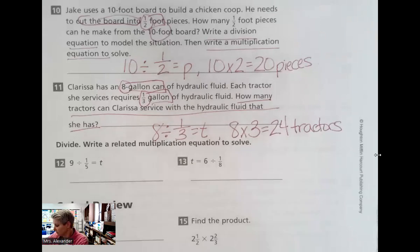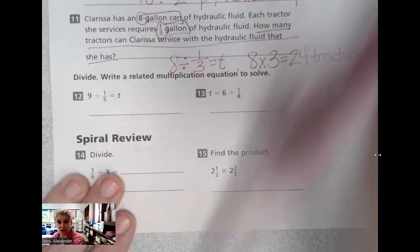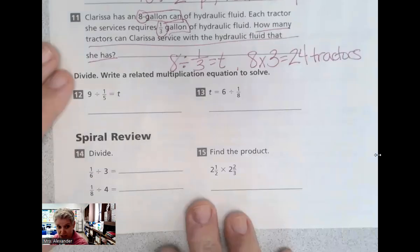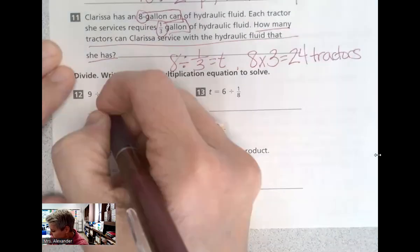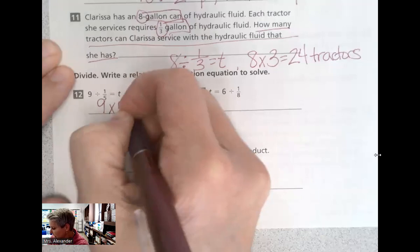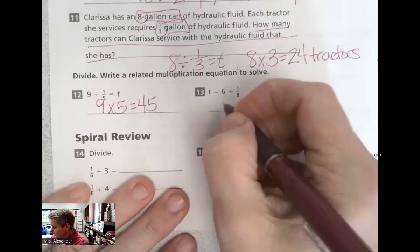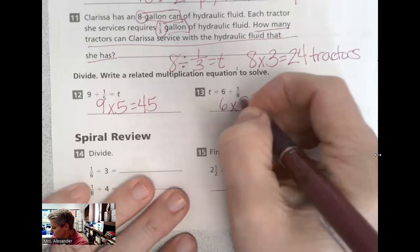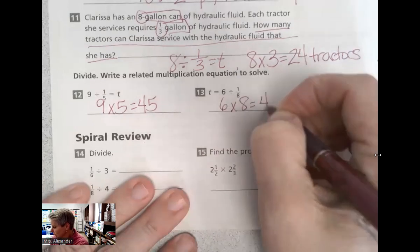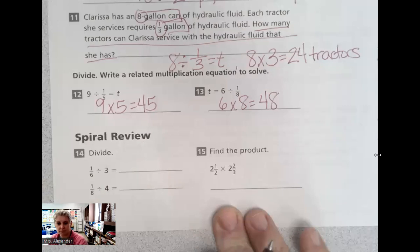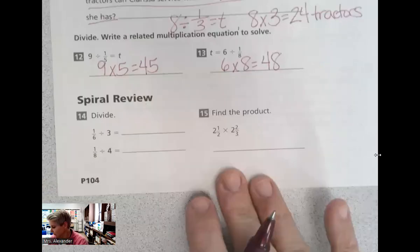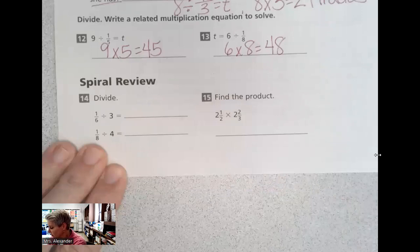All right, for number 12 and 13, we just need to use our related multiplication equation. So we're going to do keep, change, flip for each of these. And again, I can do keep, change, flip, and rearrange that a little bit so that I can put it in that order.